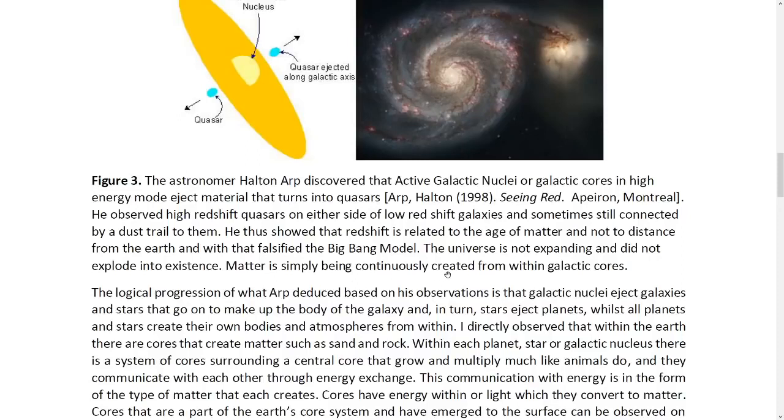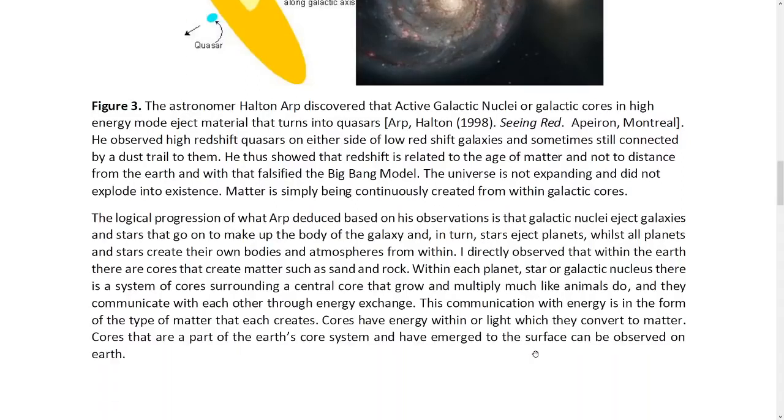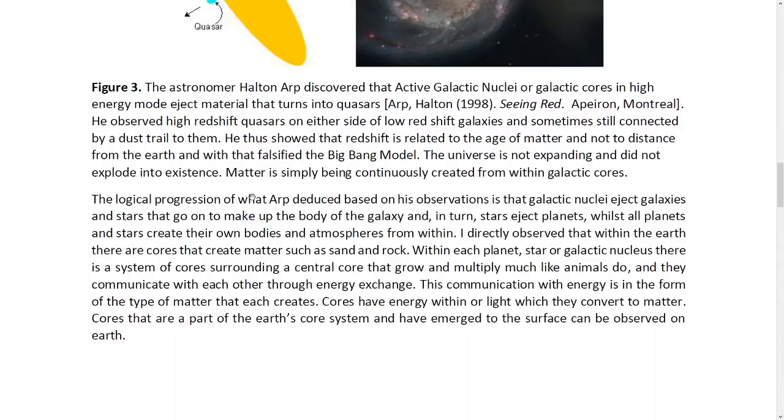Matter is simply being continuously created from within galactic cores. The logical progression of what Arp deduced based on his observations is that galactic nuclei eject galaxies and stars that go on to make up the body of the galaxy. And in turn, stars eject planets, whilst all planets and stars create their own bodies and atmospheres from within. I directly observed that within the Earth, there are cores that create matter, such as sand and rock. Within each planet, star or galactic nucleus, there is a system of cores surrounding a central core that grow and multiply, much like animals do.